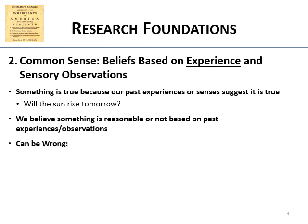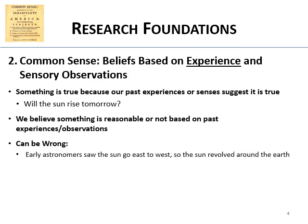Not so shockingly, our common sense can and has been wrong. For example, early astronomers saw the sun go east to west, so they rightfully concluded that the sun revolves around the earth — because that's what it looks like, just like the moon. Early folks also thought that flies came from rotten meat, until someone put a basket over it and noticed it never developed flies. They're actually laying eggs.